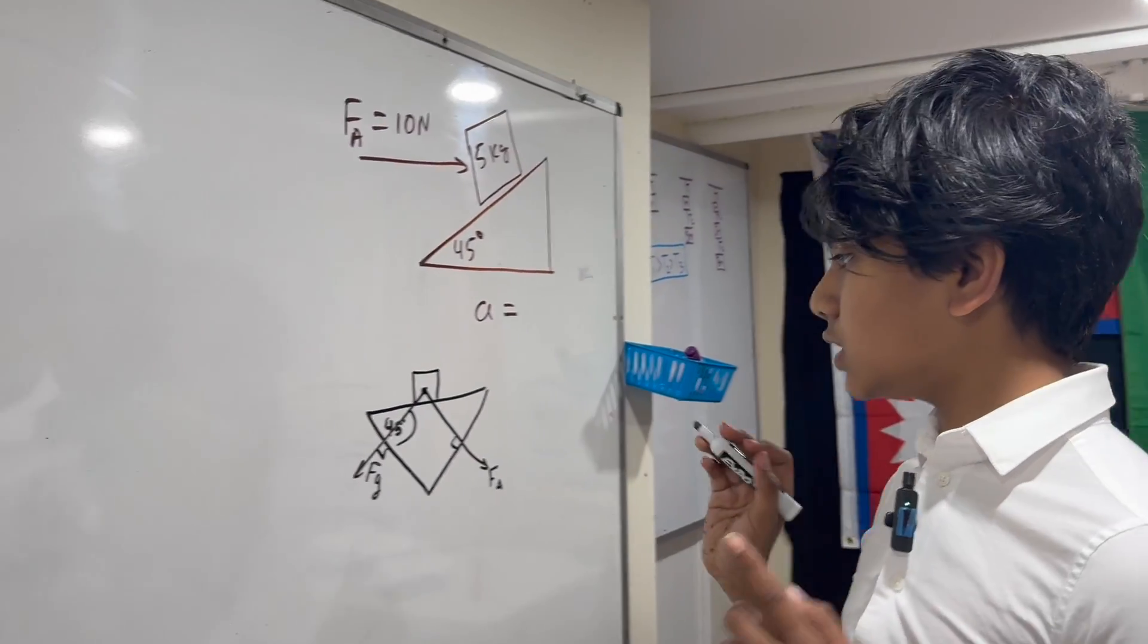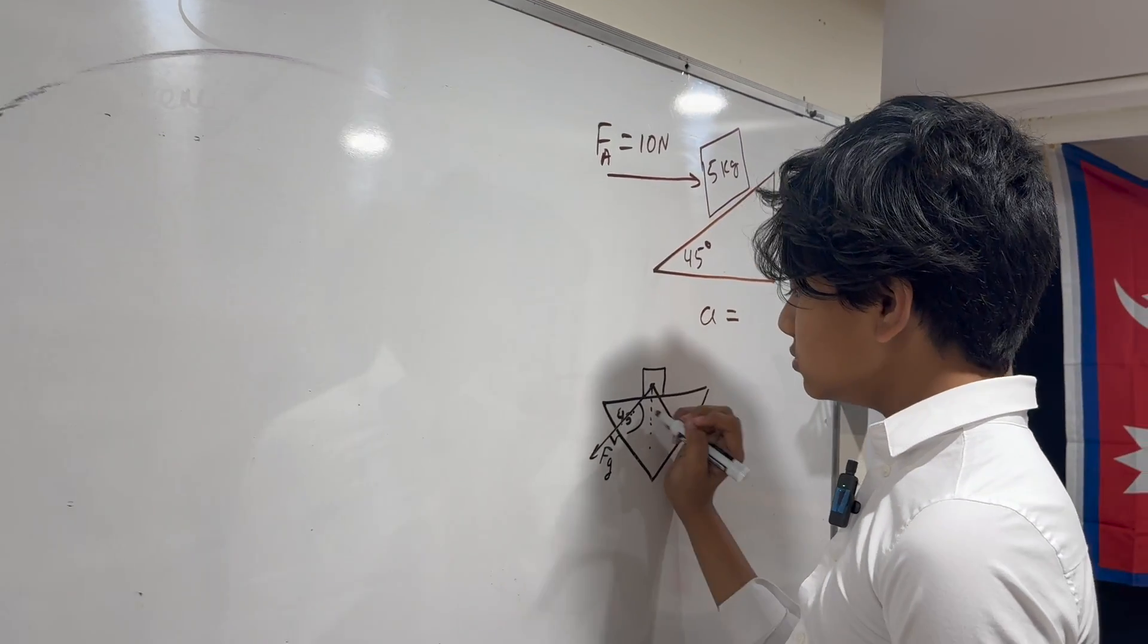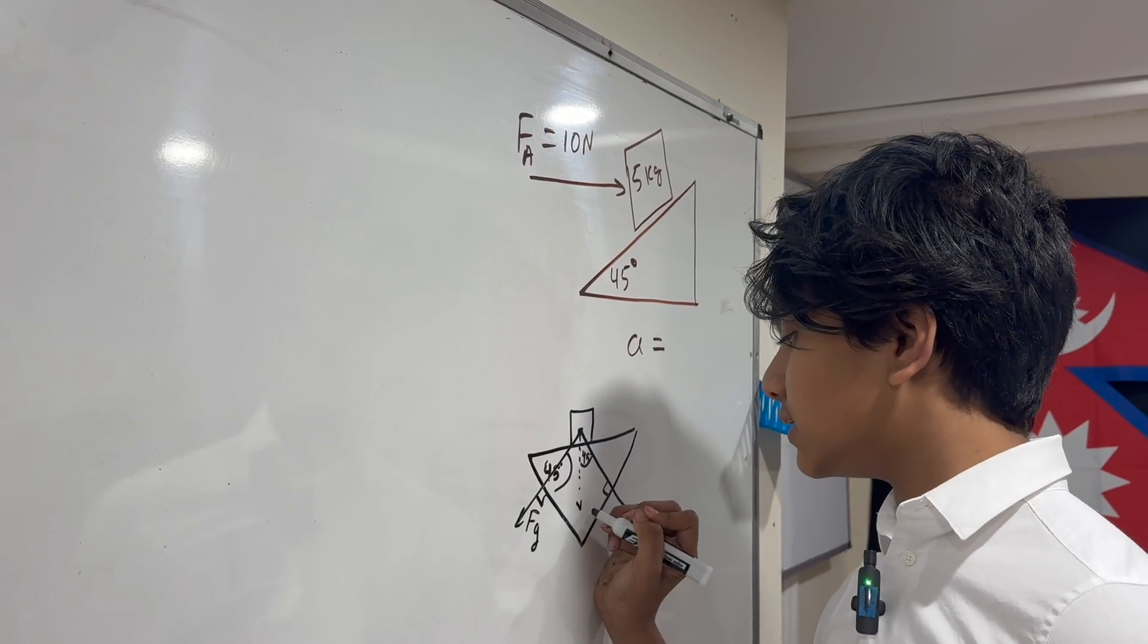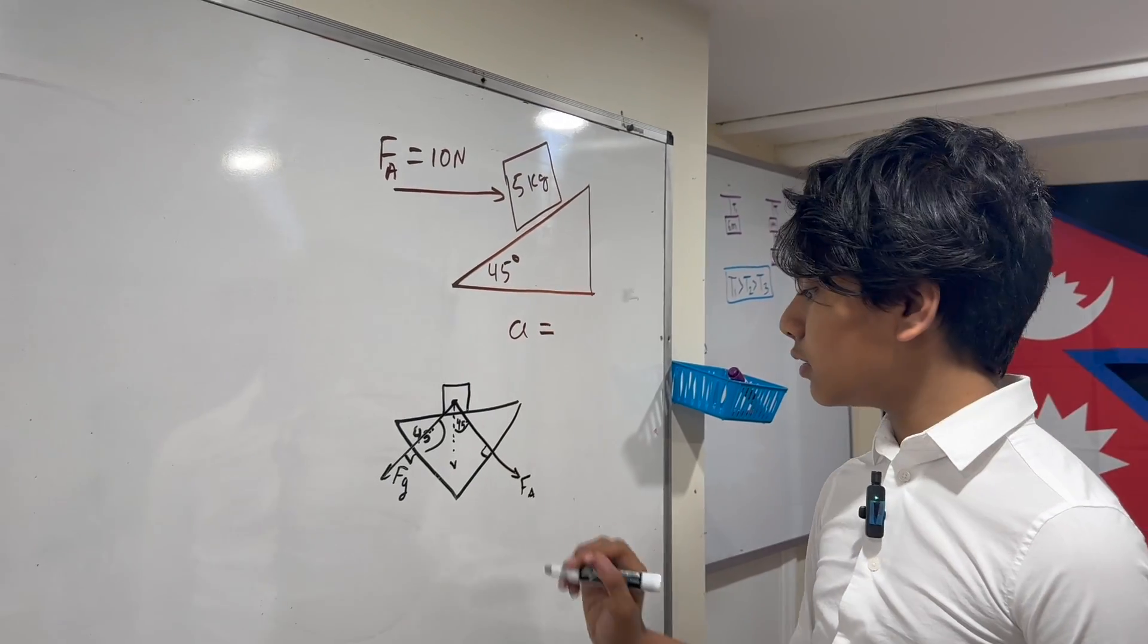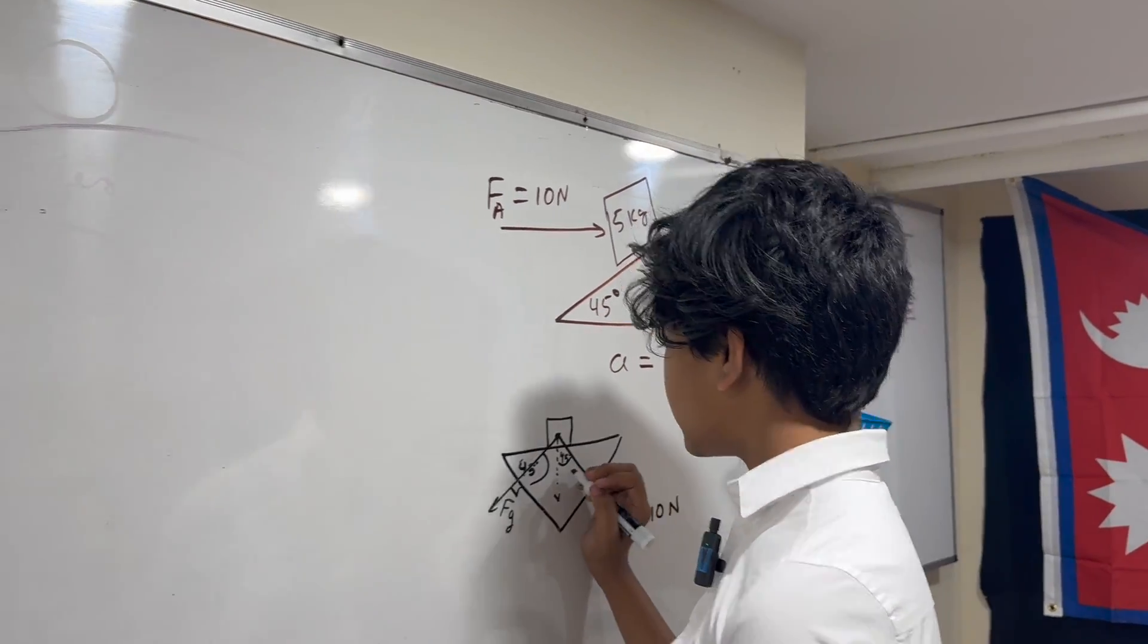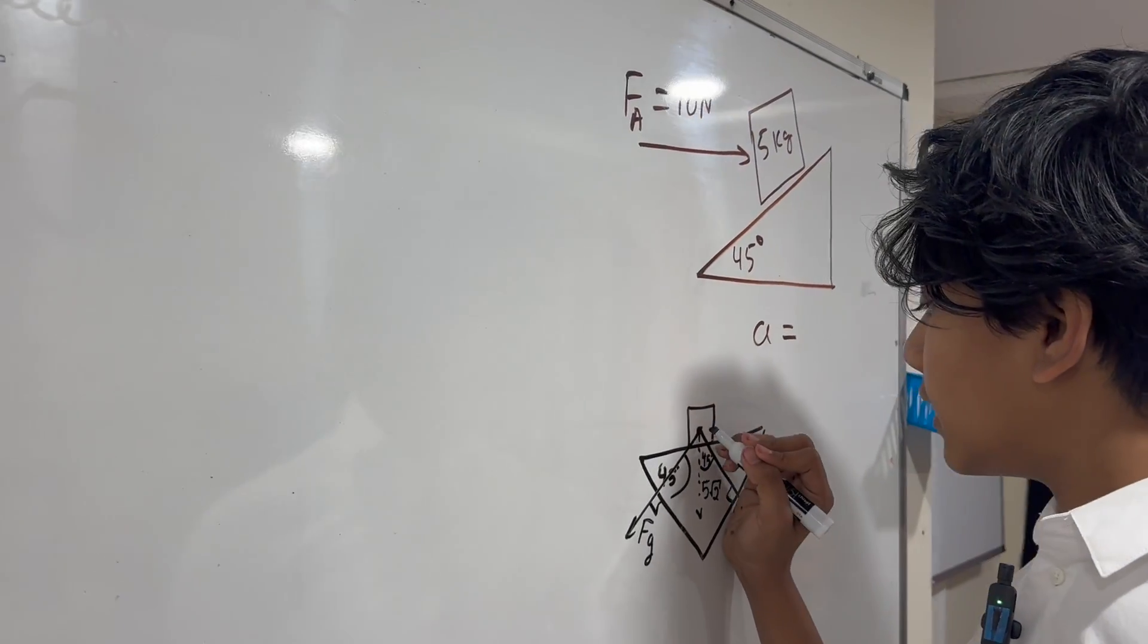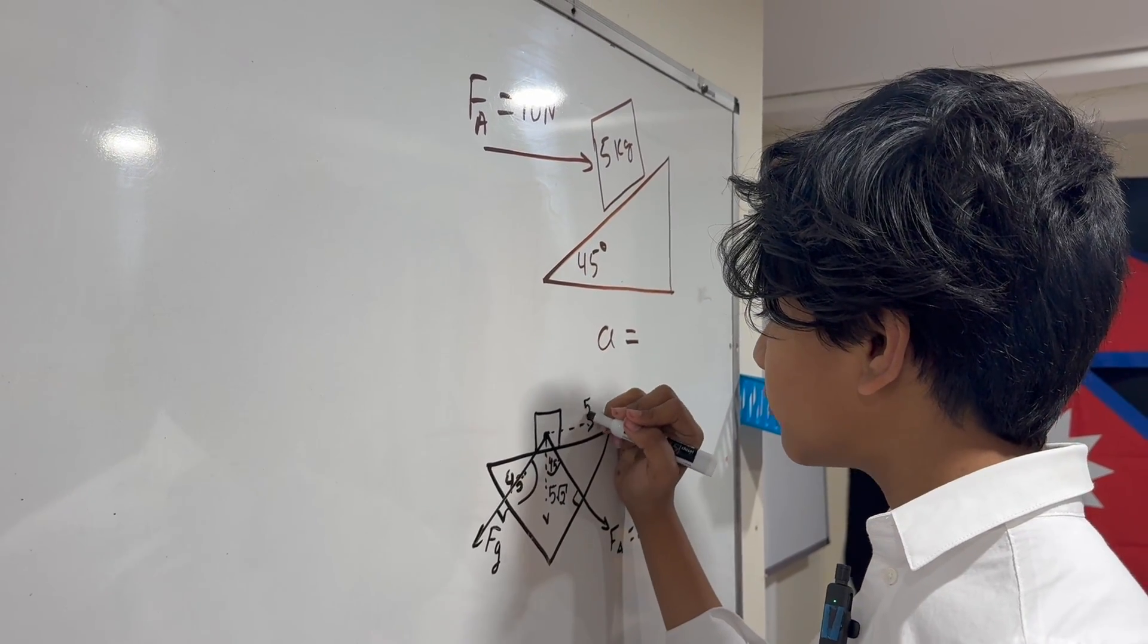Notice they're exactly perpendicular to the sides of the inclined plane. This is F applied. Now we're going to split them into their components. Since these are at 45 degrees, we can confidently say their components are just their full length times root 2 over 2. So FA is 10 newtons, so this is 5 root 2 and this is also 5 root 2.